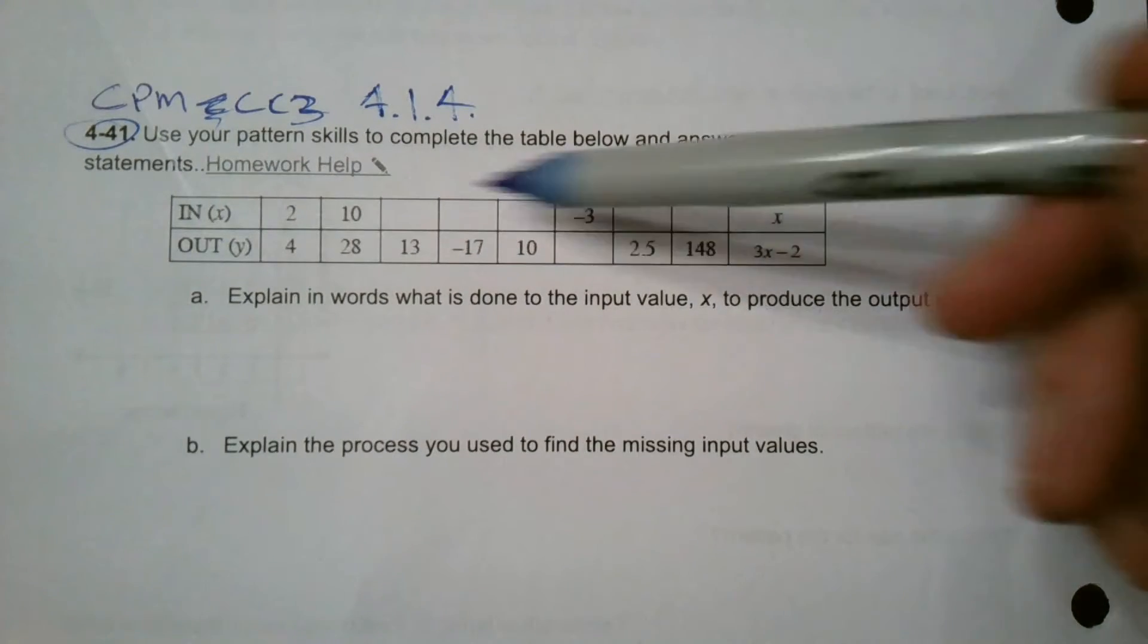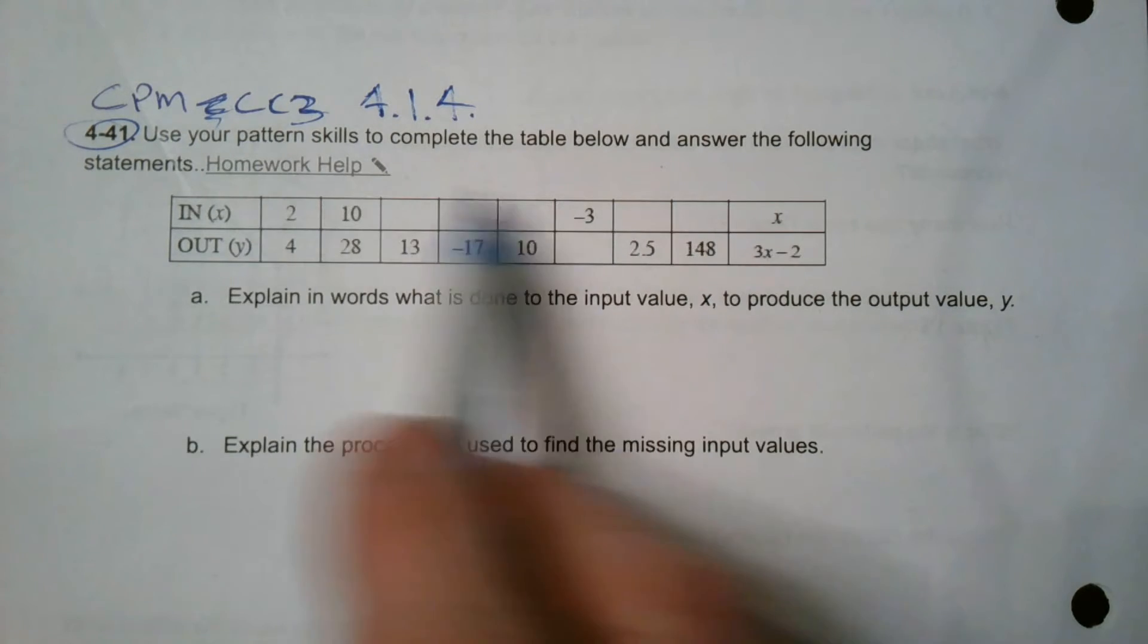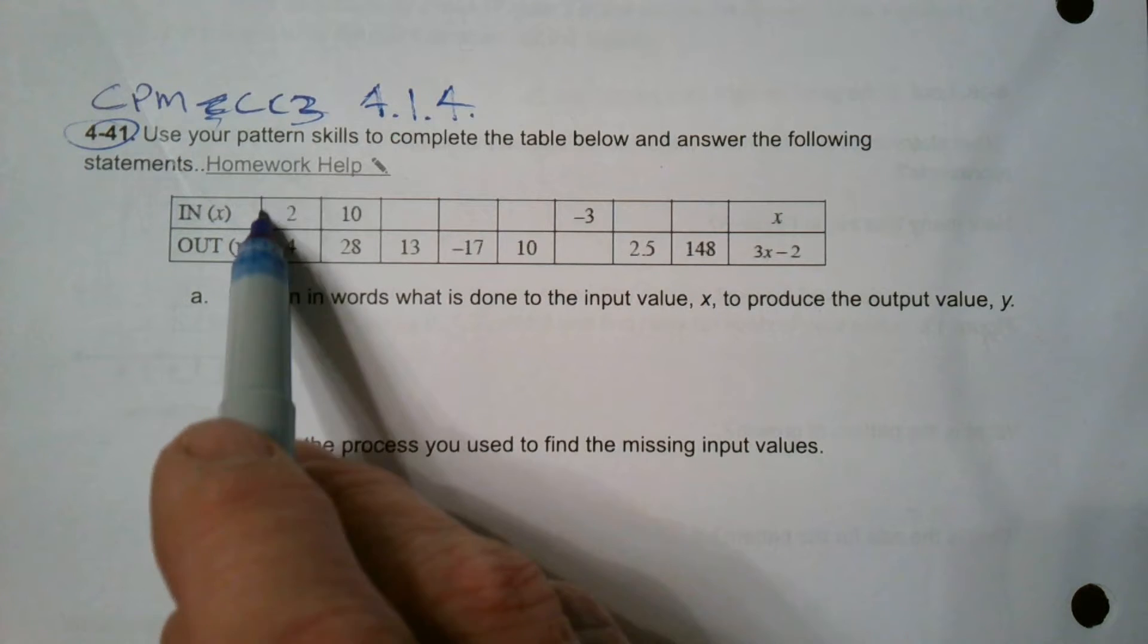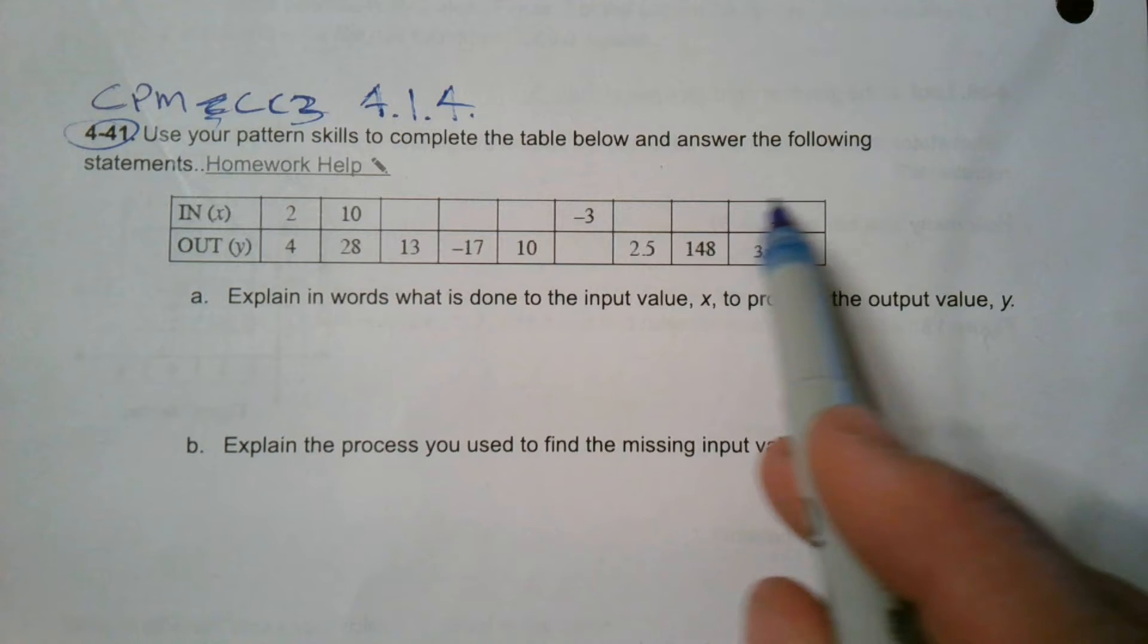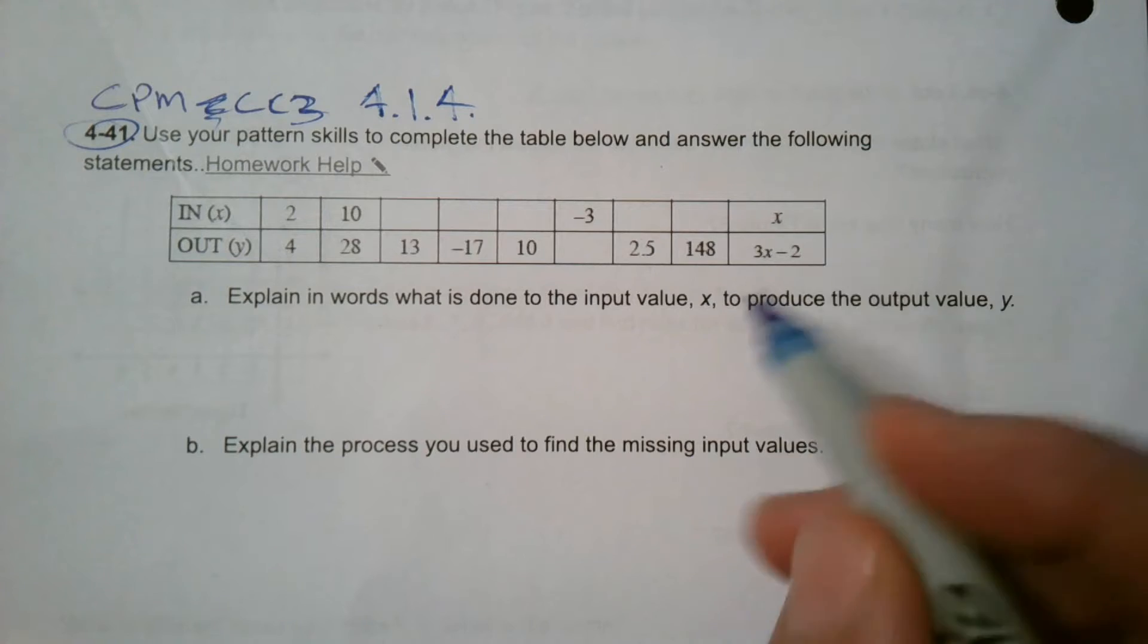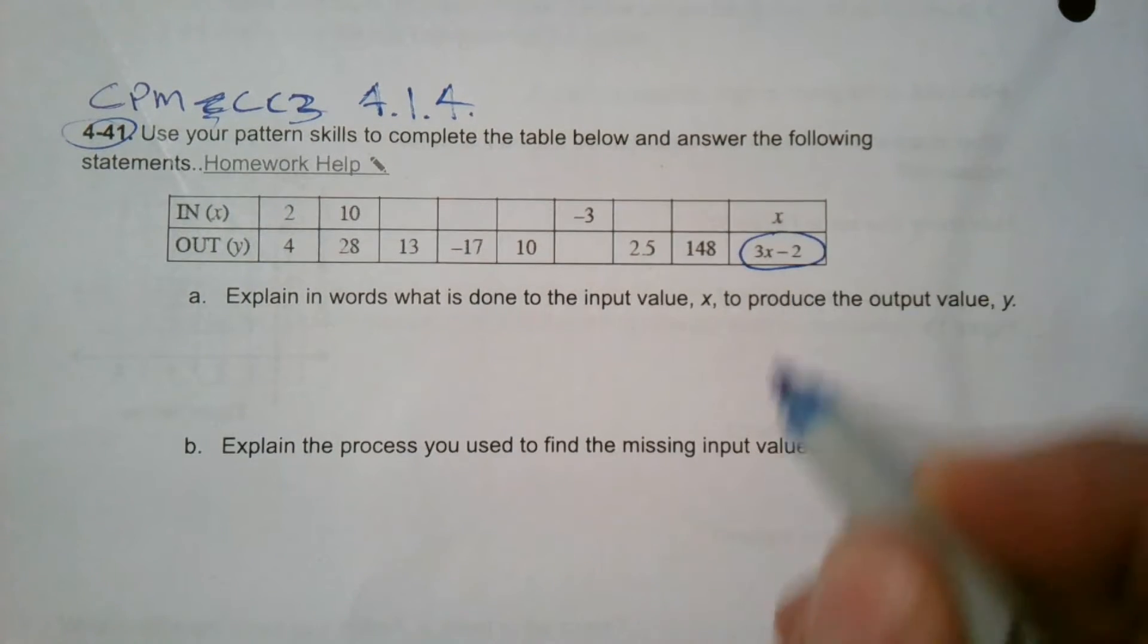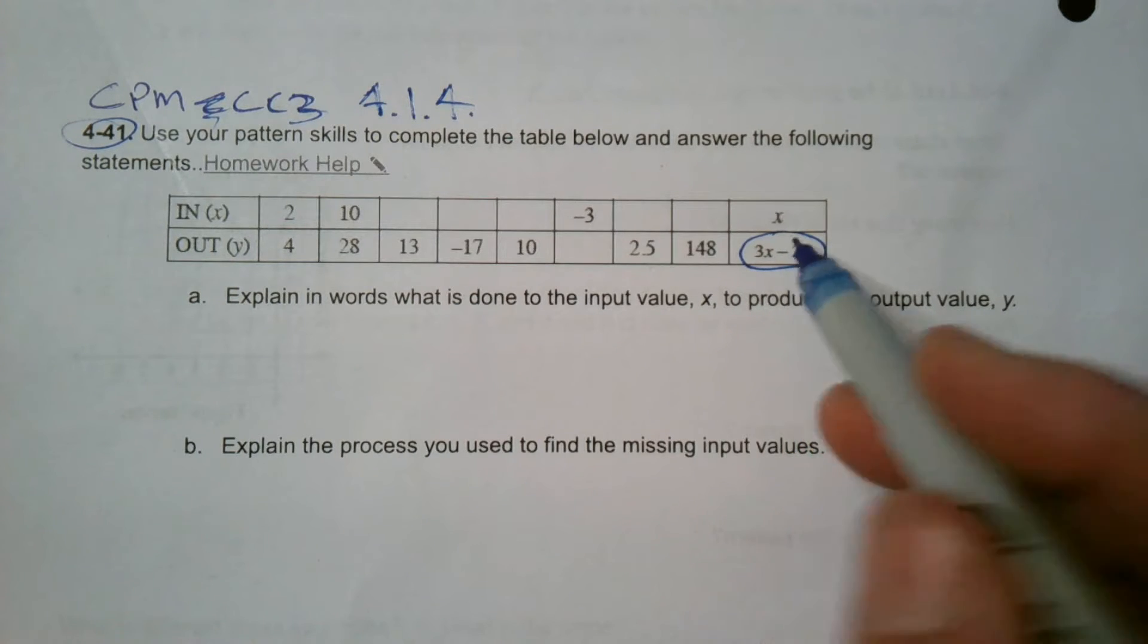So if I look, I have actually, when I think about my pattern, I'm figuring out what I do to that X to find that Y. Interesting enough, at the end of this table, they tell me if I put an X, I do 3X minus 2 to find the Y. So they actually gave me my rule within the table. That is my rule, 3X minus 2. If I put an X, I get 3X minus 2.